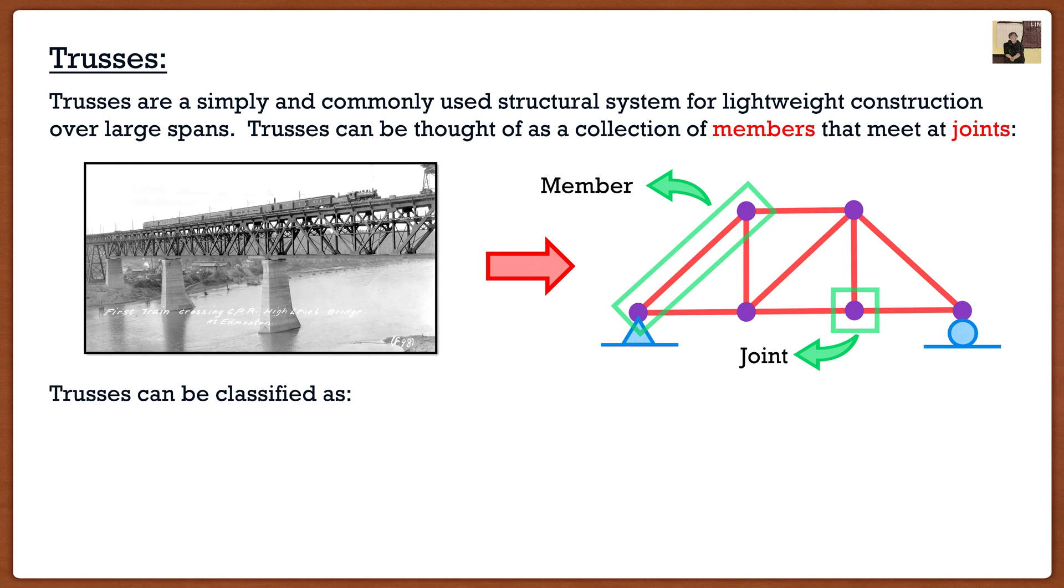Now trusses can be classified as two different things. The first one is a plane truss or a two-dimensional truss where all the members act in the same plane. The best example is the truss above and the truss that I drew using the PowerPoint clipart. The truss is actually just two members that are side by side and the railroad is in between, but those two members all act in the same plane.